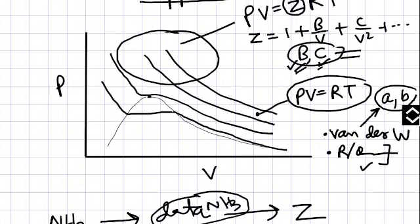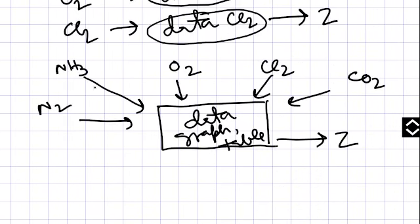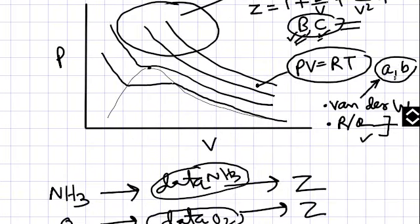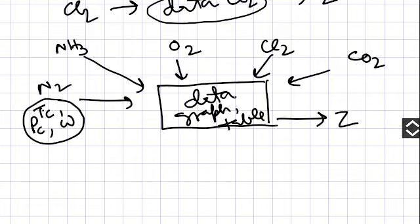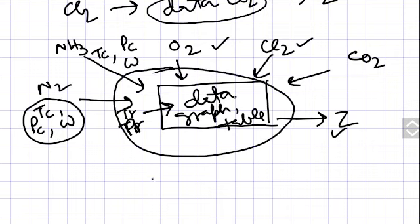Research was done and a correlation was developed where you require only TC, PC, and omega data for each gas — only three data points. It is very easy to collect this data instead of collecting A and B or B and C constants. For ammonia, for any gas, you just express the data in terms of critical temperature, critical pressure, and omega — three data points. Then you find TR and PR, put this data into the method, and find Z. All methods are the same for all gases, which is why this is called the generalized method.